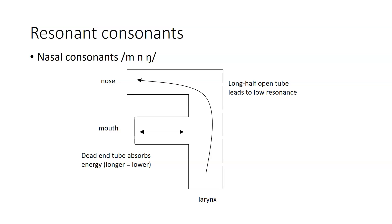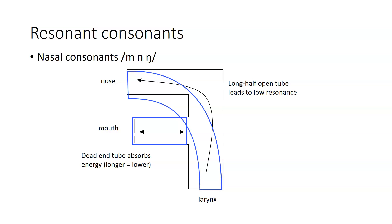Here we have the general tube representation of nasal consonants. There is a rather long half-open tube from the larynx out the nose that gives a relatively low resonance. And then there is also a dead-end tube depending on where the closure in the oral cavity is — whether that's at the lips for M, the alveolar ridge for N, or at the hard palate for NG.